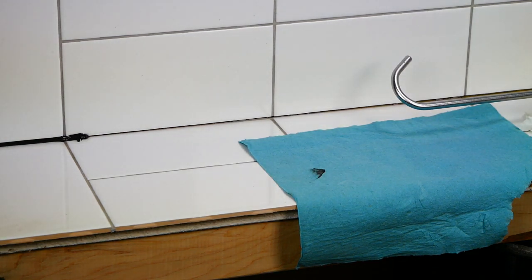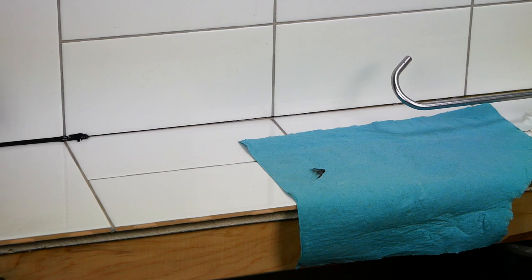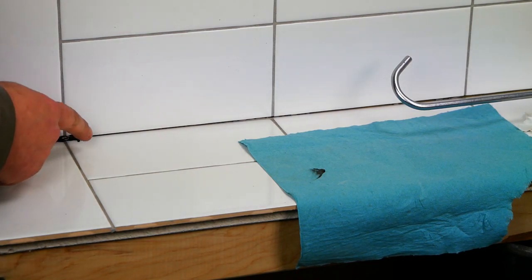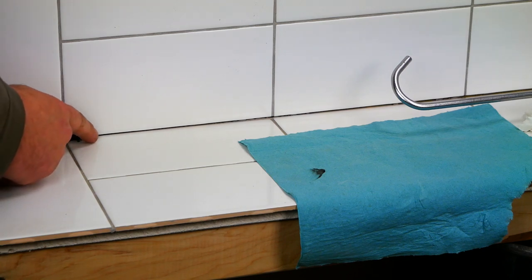So I'm going to spray that caulk joint. The concept is that wherever that alcohol is, the silicone won't stick to it. Right now, the alcohol is all over the tile where the silicone isn't.